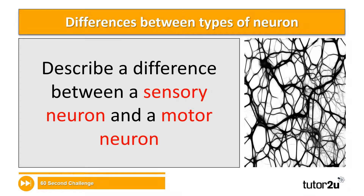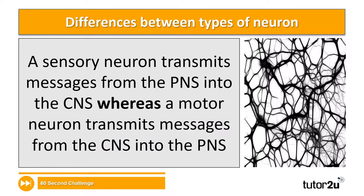The next question is question 14 on your worksheet: describe a difference between a sensory neuron and a motor neuron. In answering this question, I'd like you to think of a difference in terms of their function. Pause the video and have a go. A sensory neuron transmits messages from the PNS into the CNS, whereas a motor neuron transmits messages from the CNS into the PNS — so the direction of transmission is reversed between those two types of neurons.